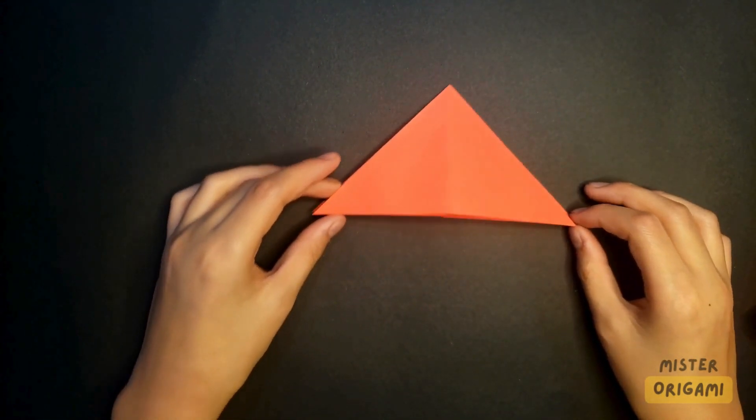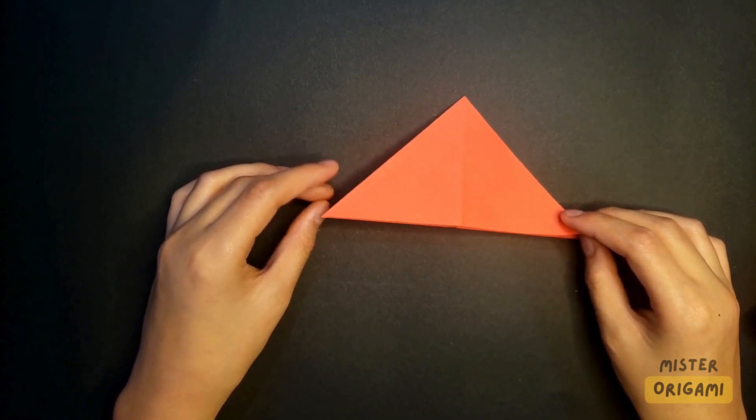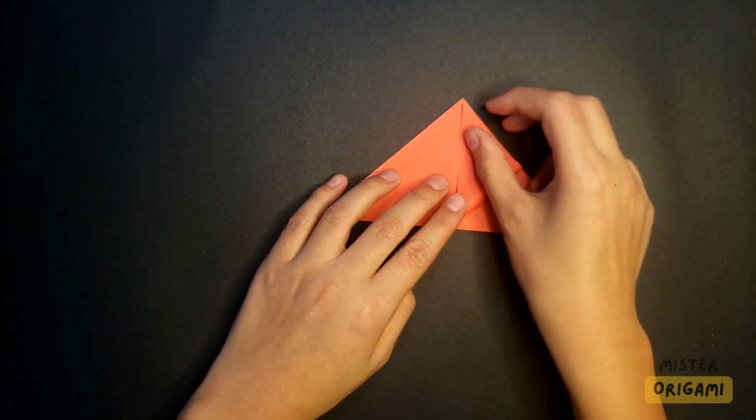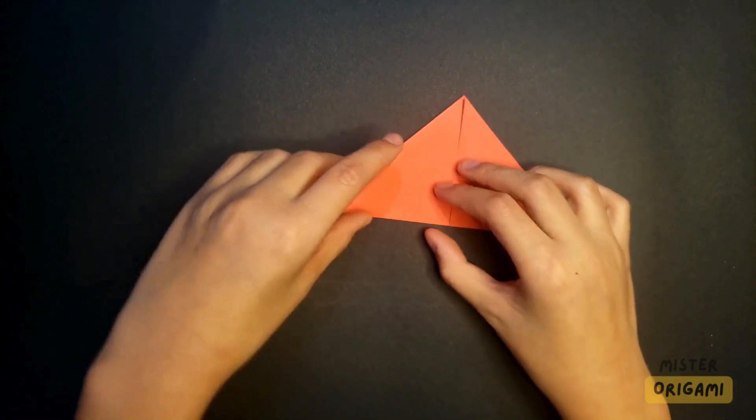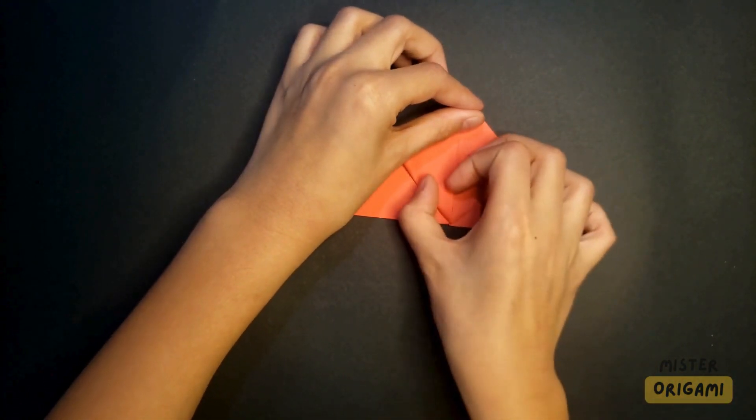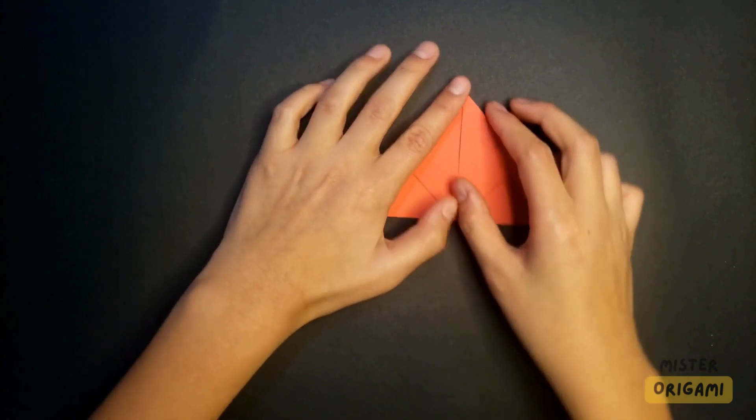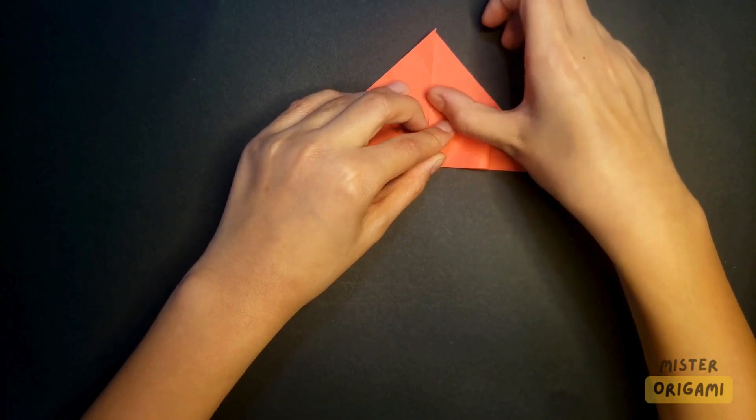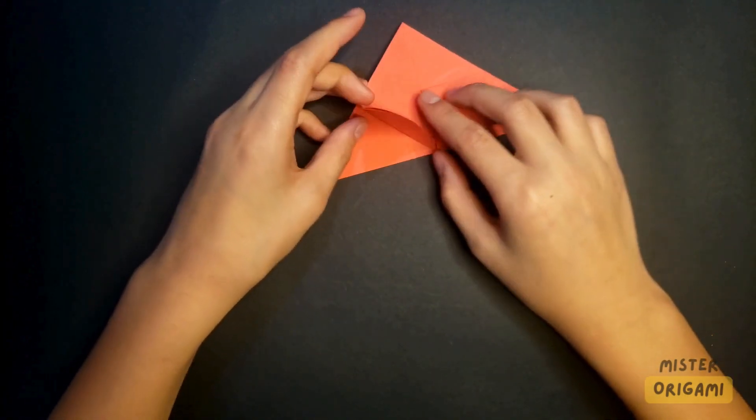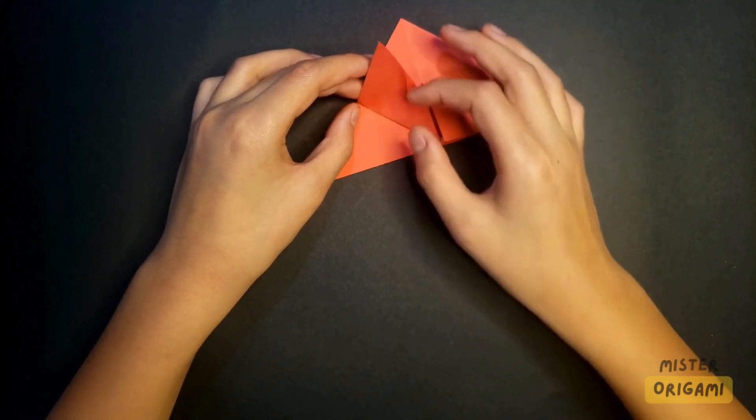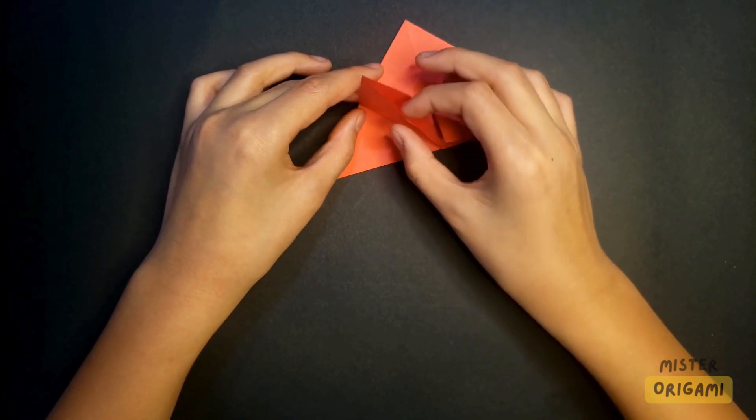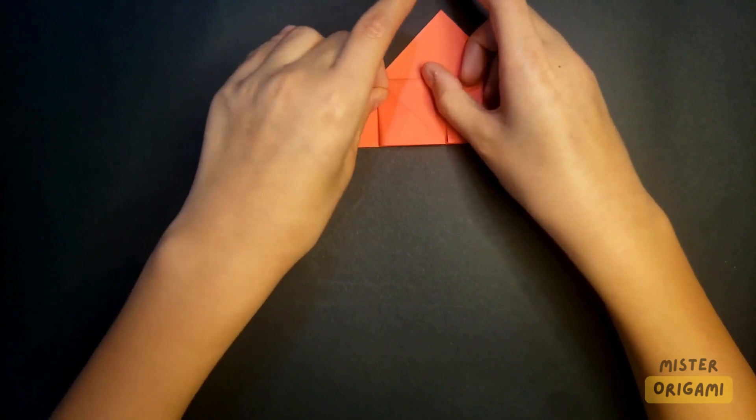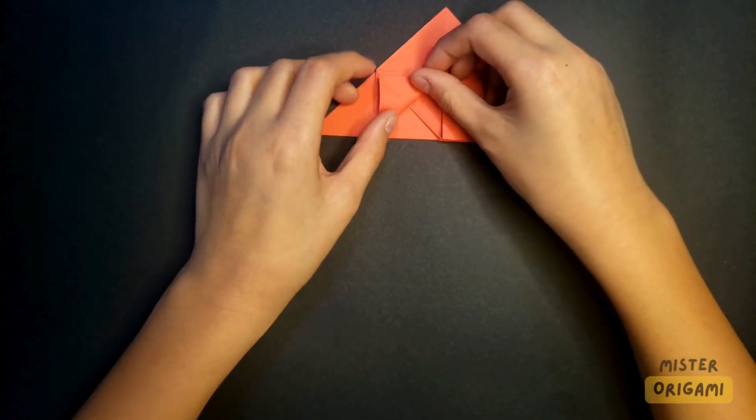After you make the water bomb base, you're gonna fold this up, these two flaps up, open, squash fold it so it's a little square, and fold this up.